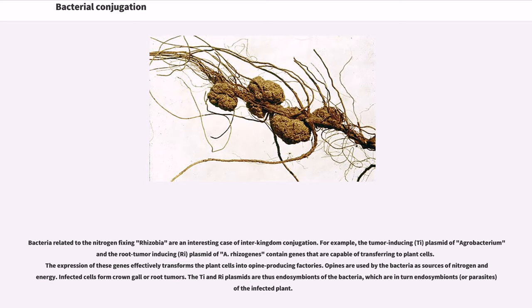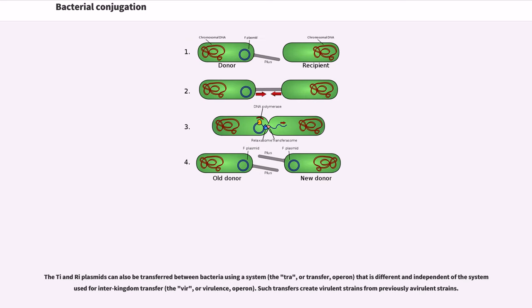The Ti and Ri plasmids are thus endosymbionts of the bacteria, which are in turn endosymbionts or parasites of the infected plant. The Ti and Ri plasmids can also be transferred between bacteria using a system, the tra or transfer operon, that is different and independent of the system used for interkingdom transfer, the vir or virulence operon. Such transfers create virulent strains from previously avirulent strains.